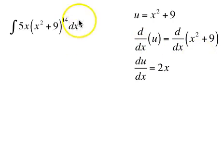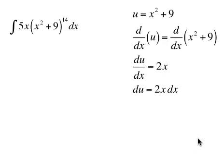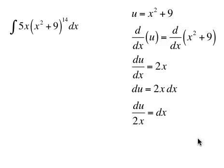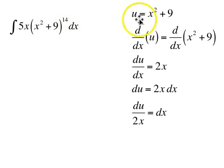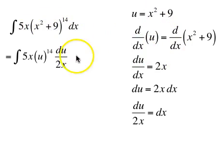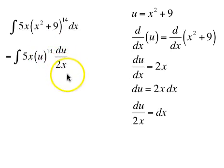Our strategy is going to be to solve for dx, so multiplying both sides by dx, du is 2x dx, and du divided by 2x is dx. So we're going to replace dx with du divided by 2x, and we're going to replace x squared plus 9 with u. We get 5x times u to the 14th times du over 2x.